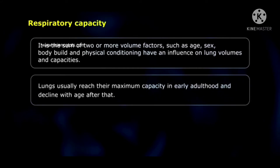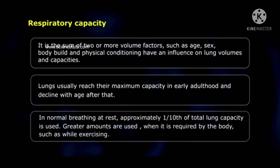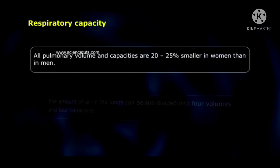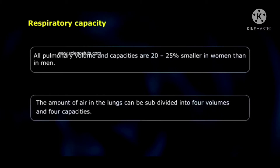Lungs usually reach their maximum capacity in early adulthood and decline with age after that. In normal breathing at rest, approximately one-tenth of total lung capacity is used. Greater amounts are used when required by the body, such as while exercising. All pulmonary volumes and capacities are 20 to 25% smaller in women than in men. The amount of air in the lungs can be subdivided into 4 volumes and 4 capacities.